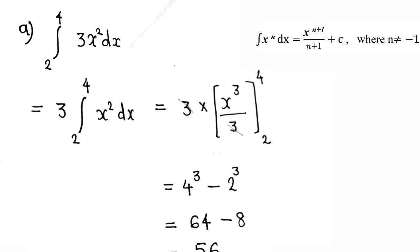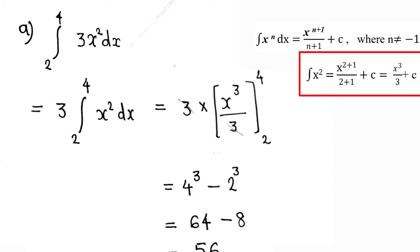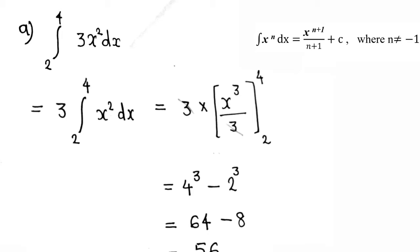So we have 3 times the integral from 2 to 4 of x squared dx, that is 3 times x raised to 2 plus 1 divided by 2 plus 1, which is 3 times x cubed over 3. The 3s cancel, giving x cubed evaluated from 2 to 4. Applying limits: 4 cubed minus 2 cubed equals 64 minus 8, which equals 56.